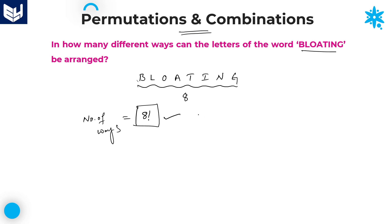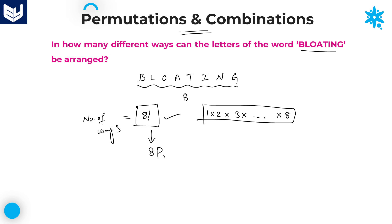If you want to calculate the answer, just multiply the product from 1 to 8. But in general, from an examination point of view, the options will mention 8 factorial, or 8P8, or P(8,8) — both are the same meaning. If you want, you can multiply all those values to get the numerical answer. Let's move on to the next question.